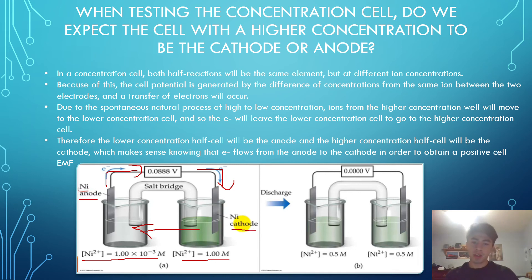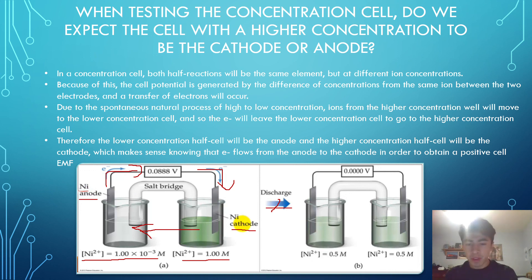Once we move to equilibrium, we see that the two half cells were able to achieve equilibrium by balancing out the common ion.